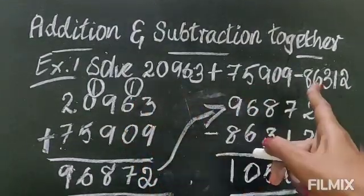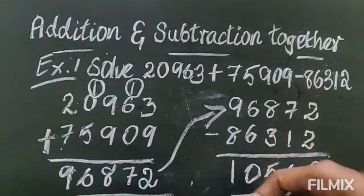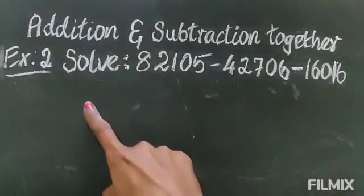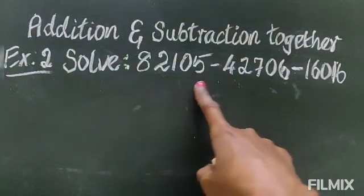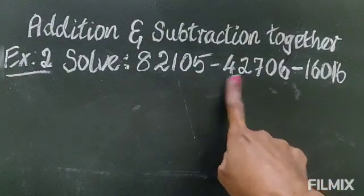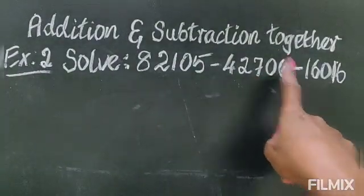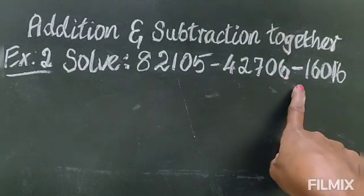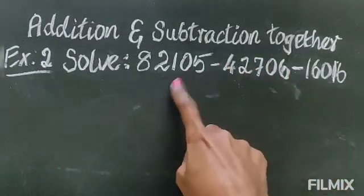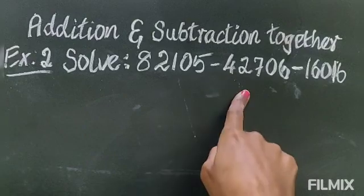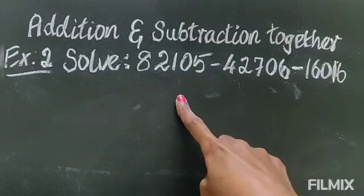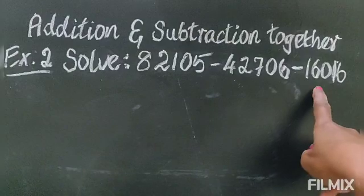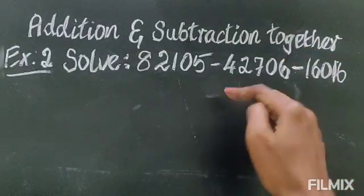So first you will do the addition and next you will do the minus. Now see the second example. Here also minus, here also minus. But in the first sum here was plus and here was minus. So in this case what you will do — first you will minus these two numbers, then the difference what you are getting, from there you will minus this number.